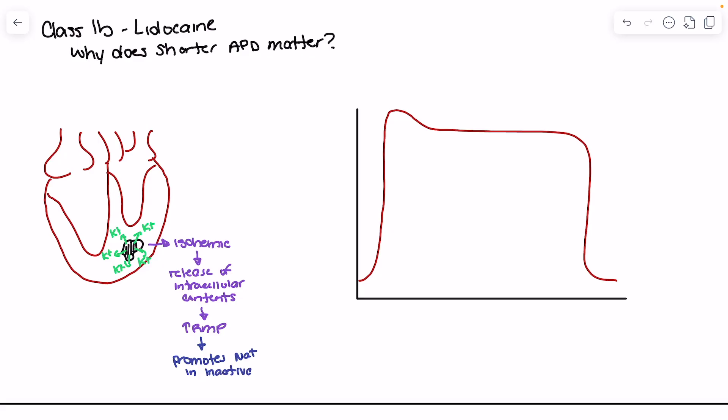The sodium channels are not deactivated — the pore is open, but the IFM motif is blocking it. That's what creates the structural changes which lidocaine likes. Lidocaine prefers the inactivated state because the IFM motif is blocking the sodium channel and there is more access to hydrophobic residues. This is where we see a preference for lidocaine binding — it prefers the inactivated state and does not have a preference to bind in the deactivated state.